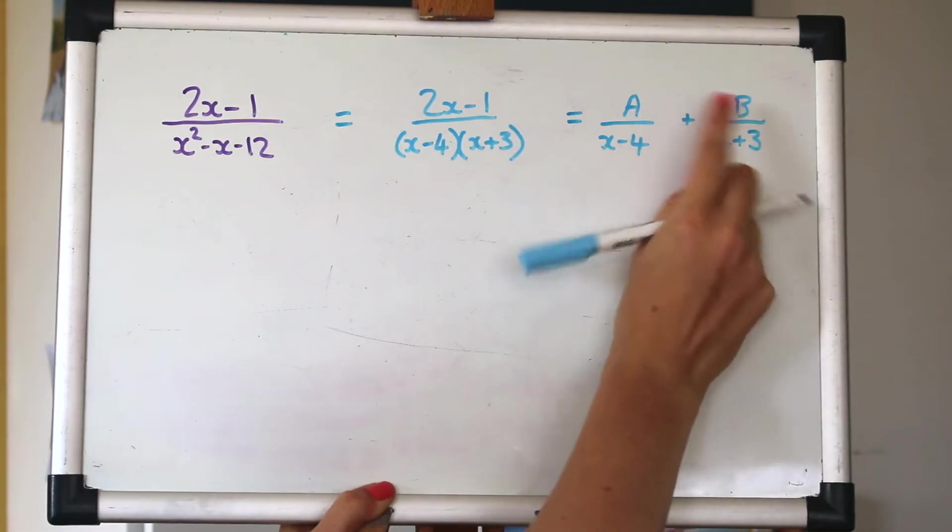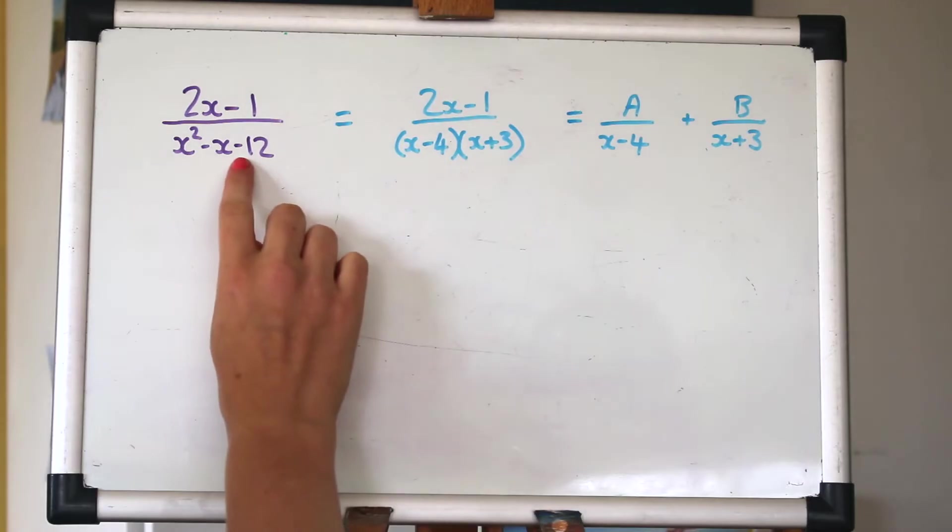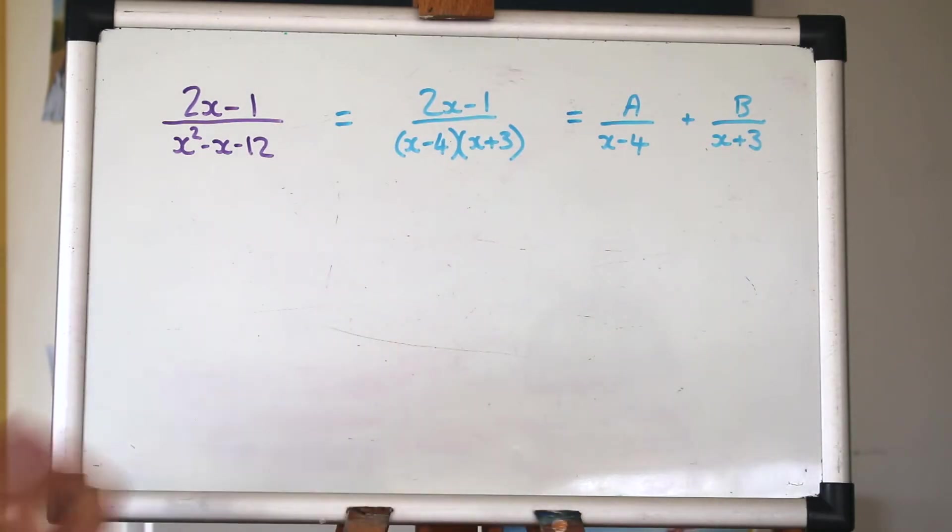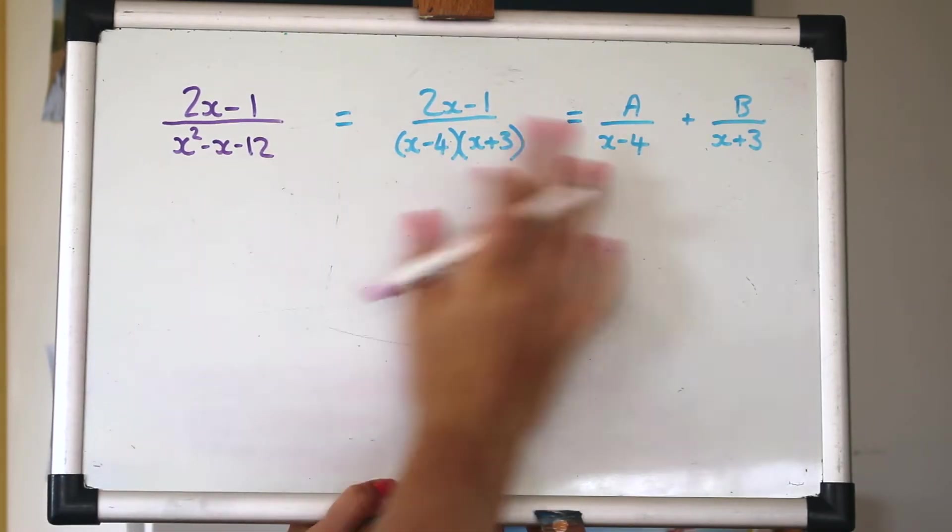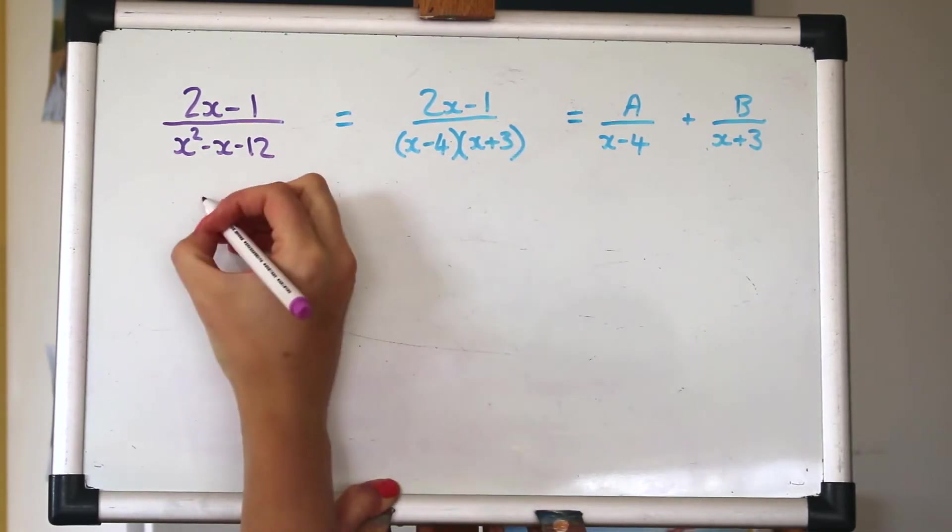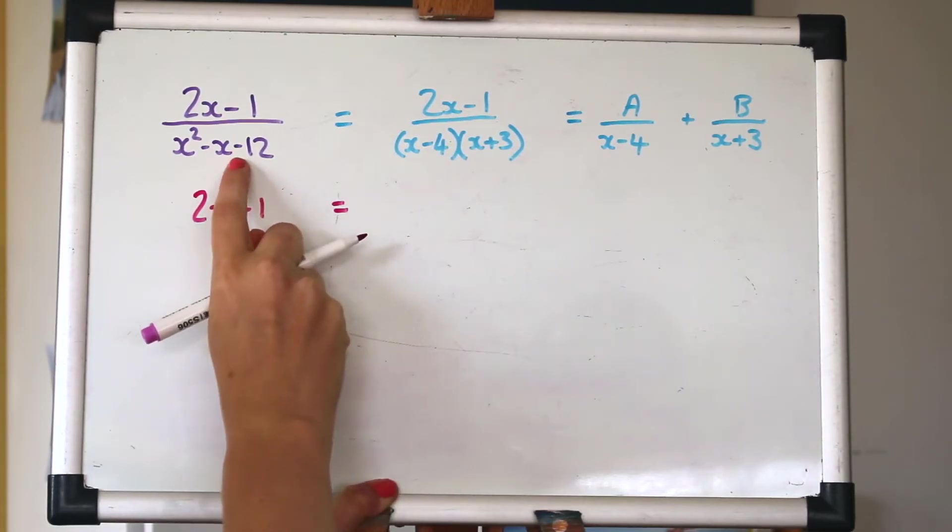We don't know what those numerators are yet, but we're going to work to find these out. So really we're just practising splitting a fraction into some smaller pieces and this has a lot of really useful applications, particularly when we integrate. So how are we going to find a and b? The easiest way, I think, is to multiply everything on the left and the right hand side by the whole of that denominator there. So we'll just be left with 2x minus 1 on this side.